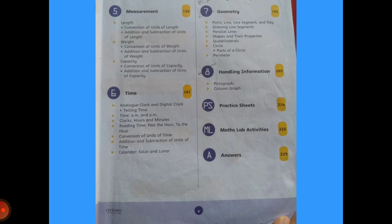Chapter 5 is about measurement. Measurement is how we can measure anything. In this, we will study about three types of measurements: length, weight, and capacity.